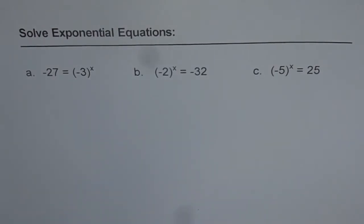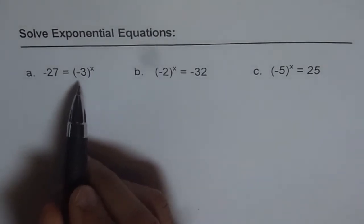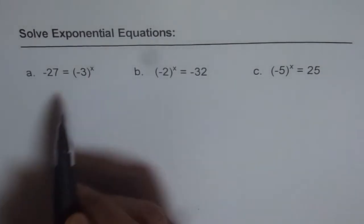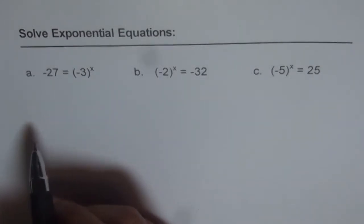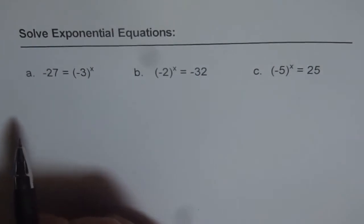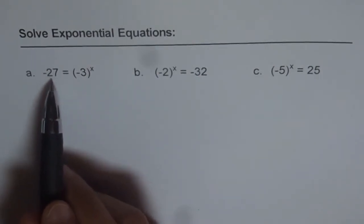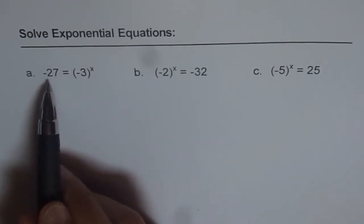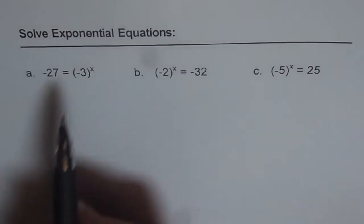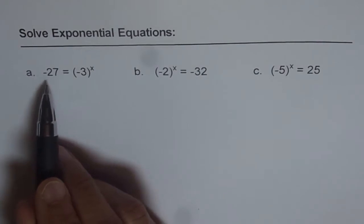We will solve exponential equations. In these examples we have taken some negative numbers, and let's see how to work with them. For example, minus 27 equals minus 3 to the power of x. To solve this equation, we are trying to write minus 27 in exponential form with a base of minus 3 raised to some power — that is the whole idea.